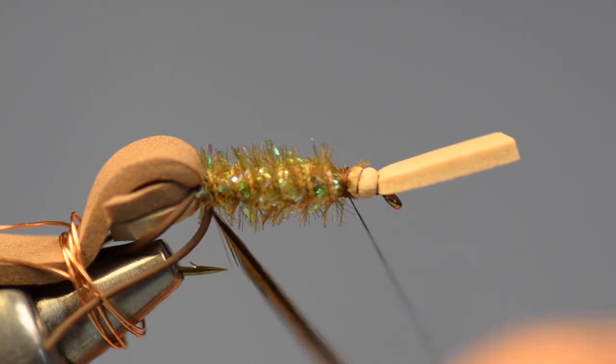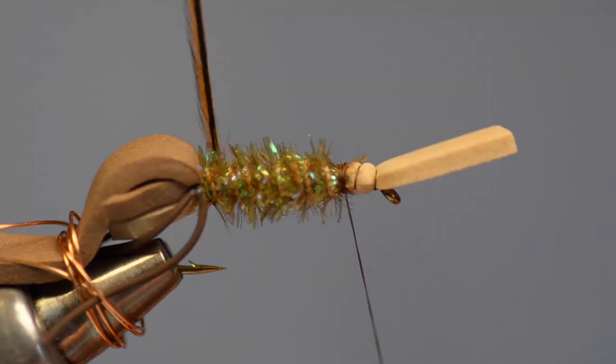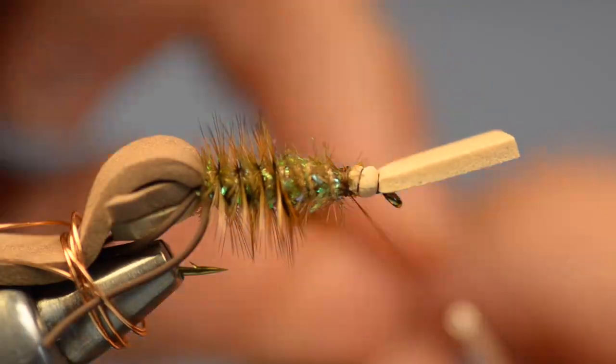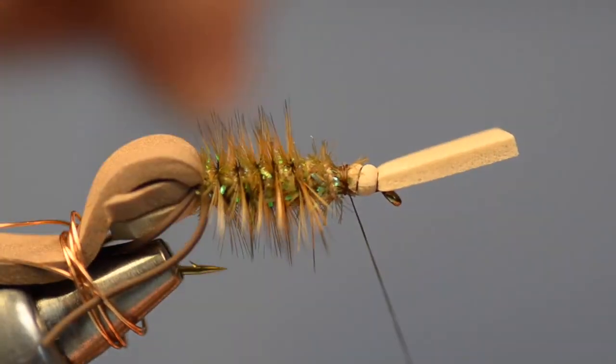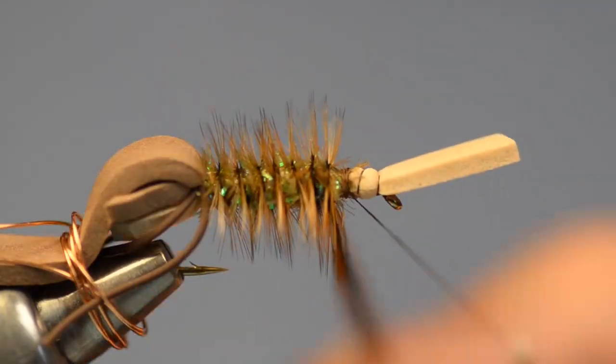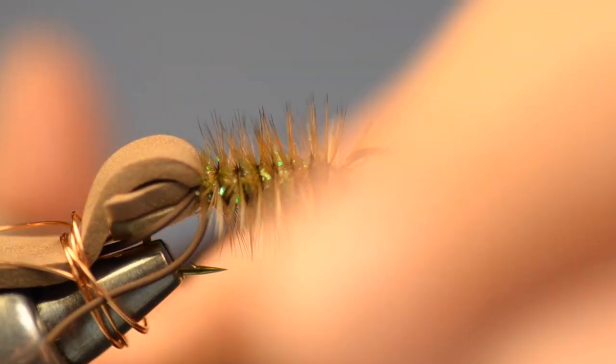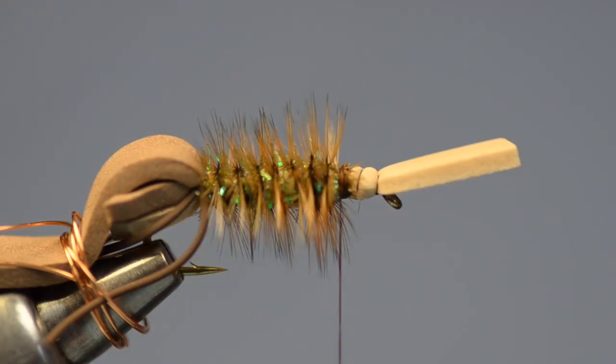Anchor that down with the last couple turns. And then I'm going to spiral wrap my hackle feather, just nice evenly spaced turns forward through that body. And I'll tie that off at the front and trim out the excess.